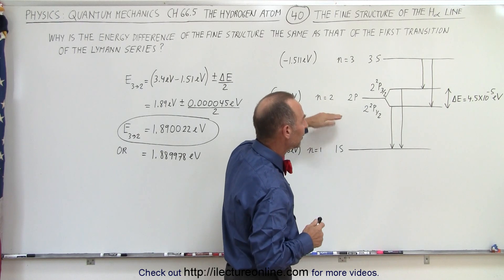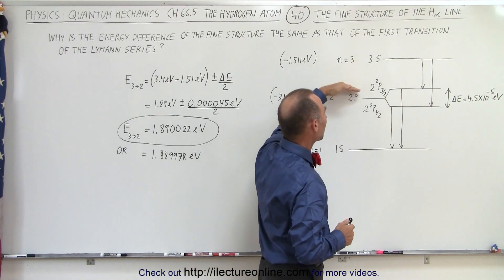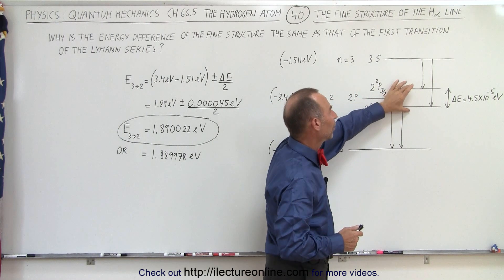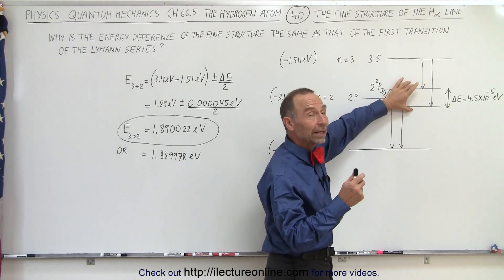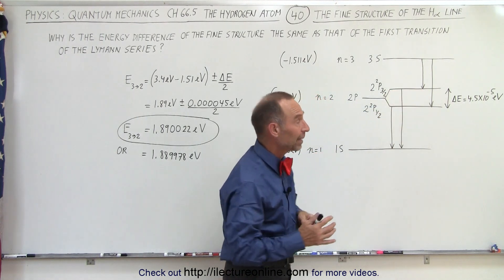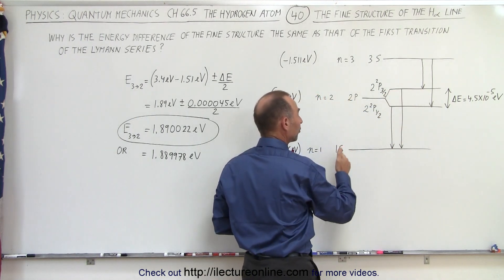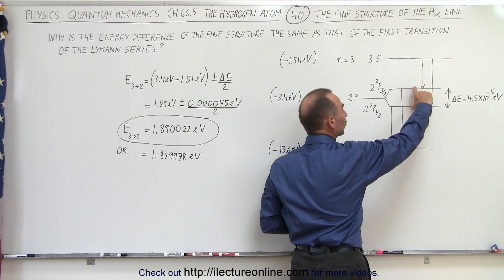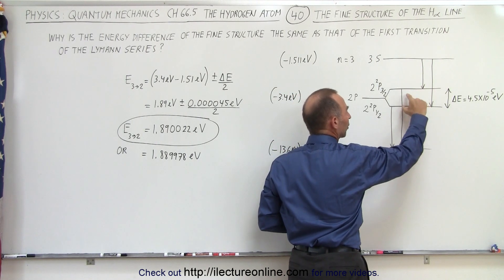You can see here that the energy difference in the jump has to be the same because here the energy difference is created in where the electron arrives at versus when the electron starts from. In the Lyman series jumping from the second to the first energy level the energy difference is caused by where the electron starts from.